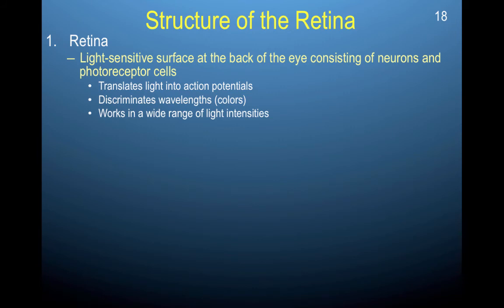What we're going to be talking more about is the retina, where the photoreceptor cells are. So the retina is a light-sensitive surface at the back of the eye, consisting of neurons and photoreceptor cells. What the retina does is it encodes the information, so it translates light into action potentials. It also discriminates different wavelengths, so it allows us to see color. And it works in a wide range of light intensities. So we can see in dim light, and we can see in bright light.